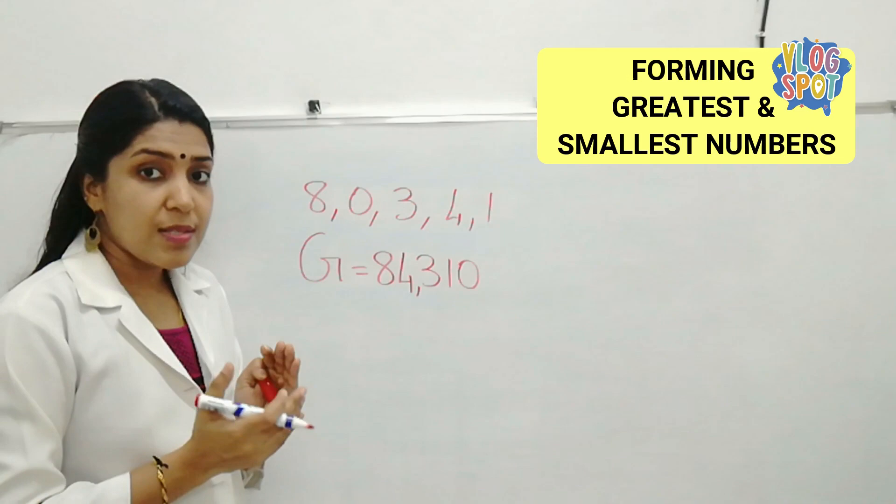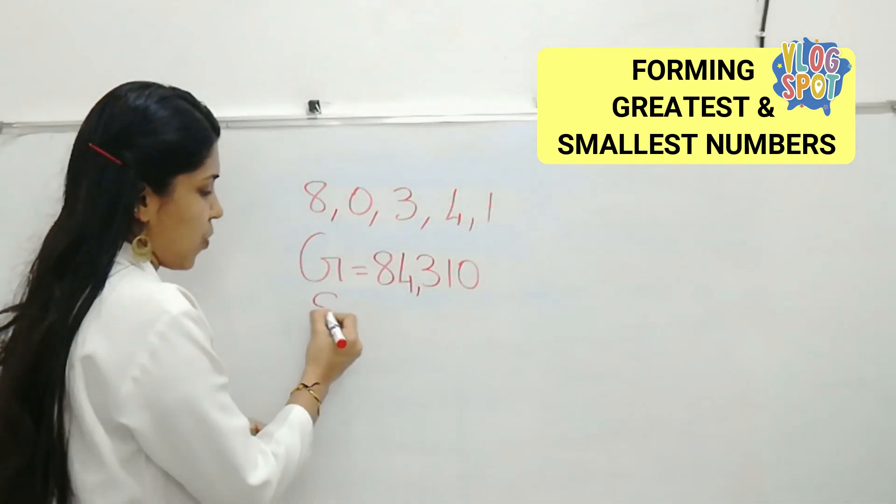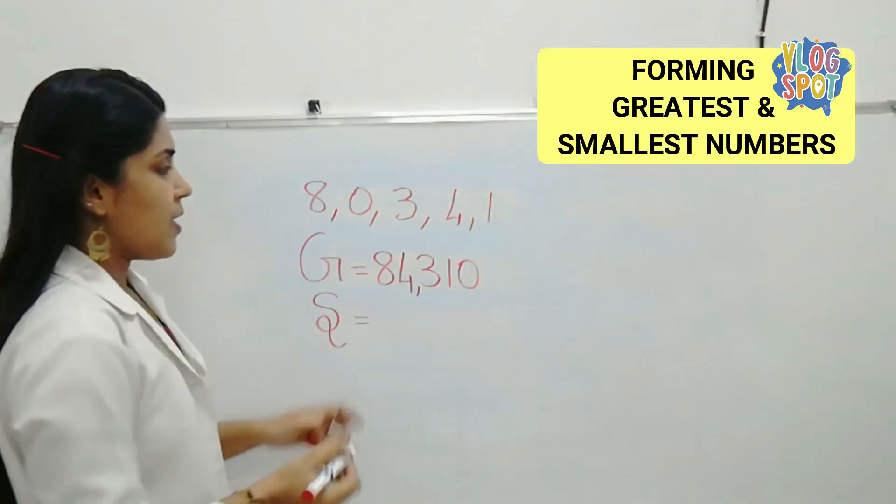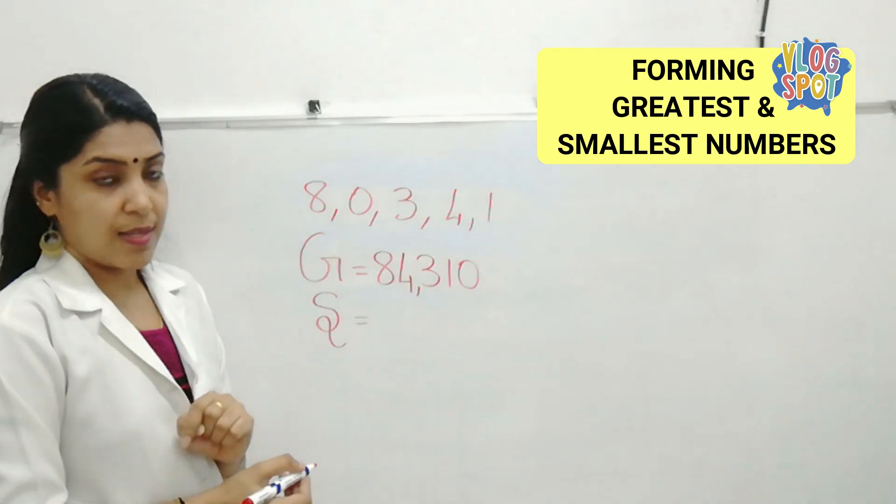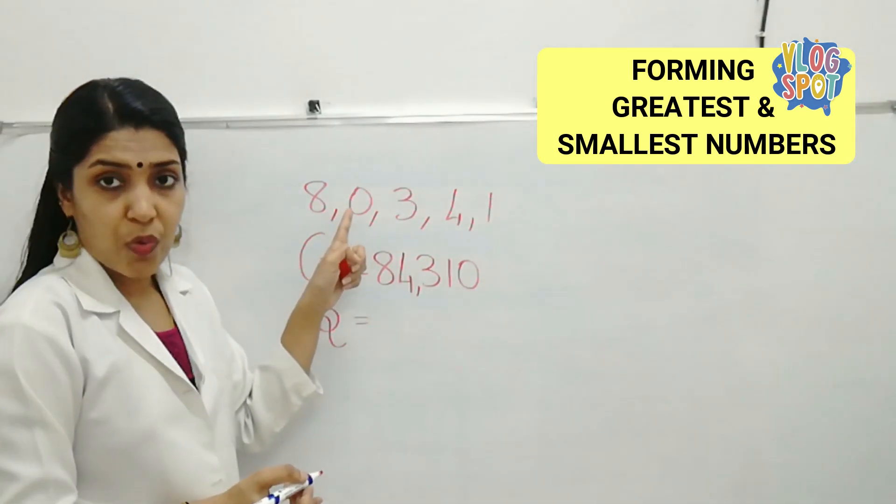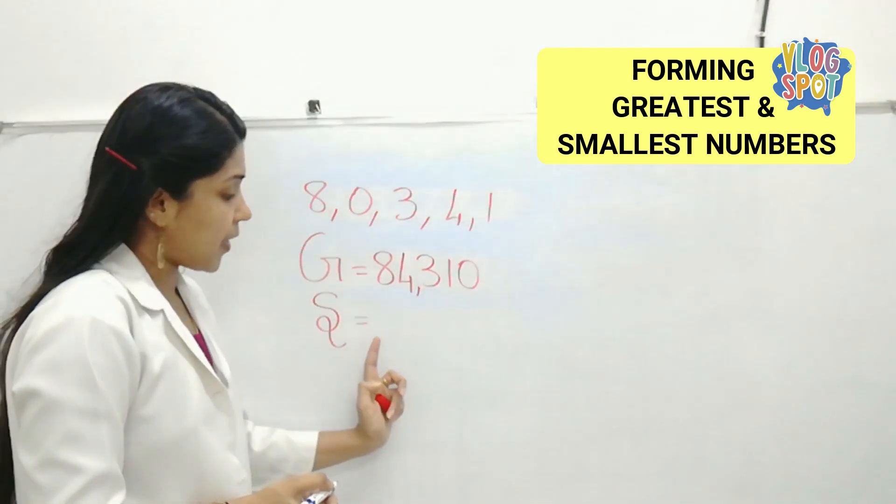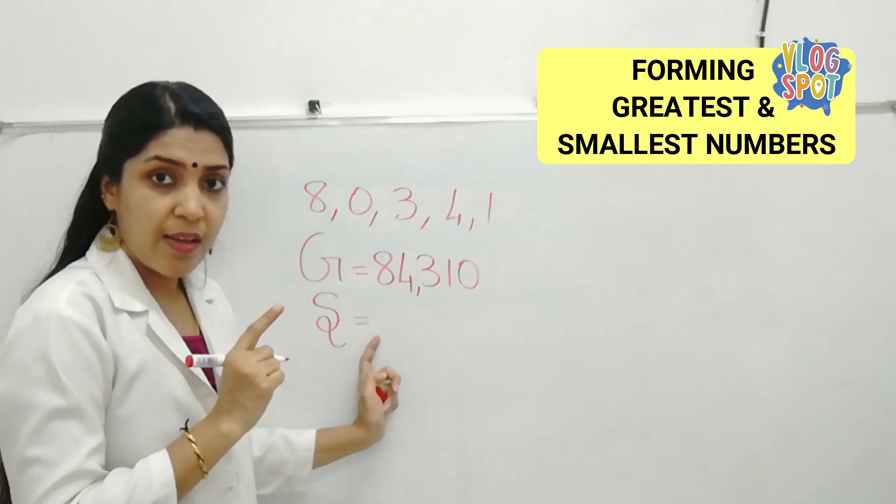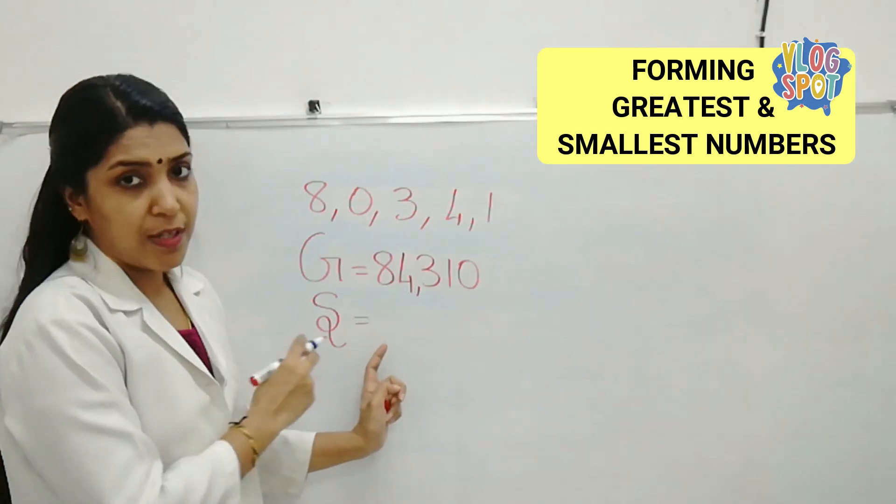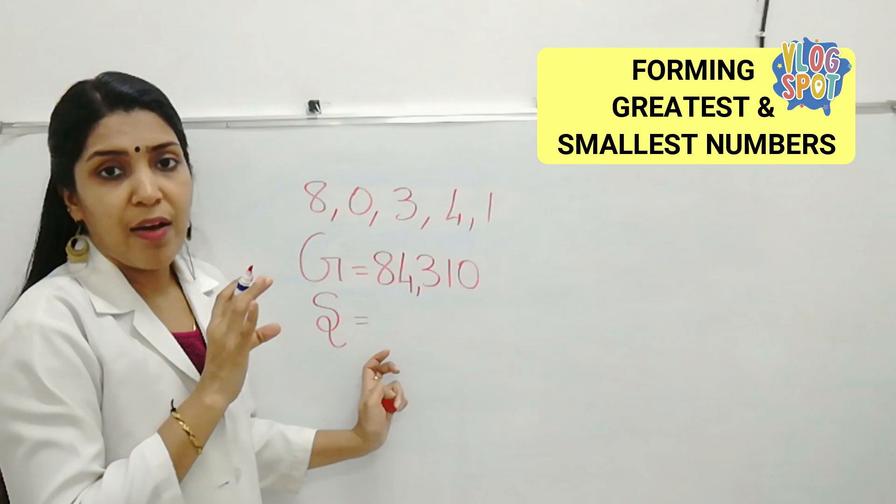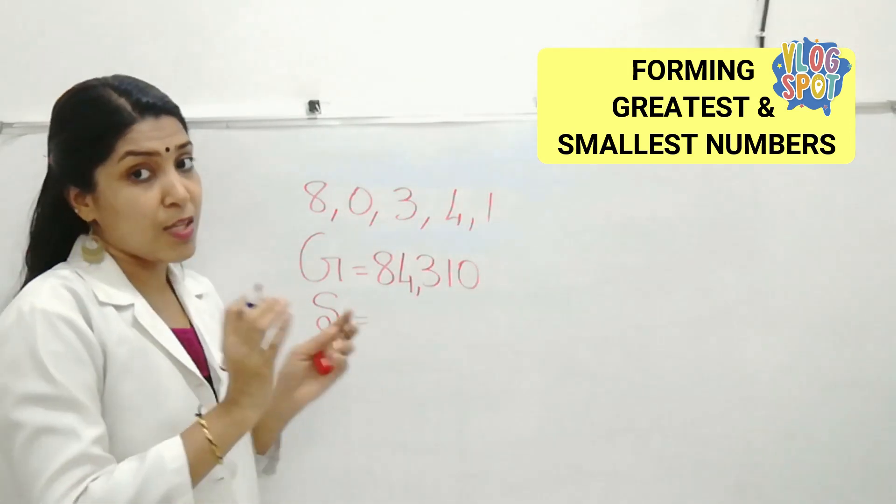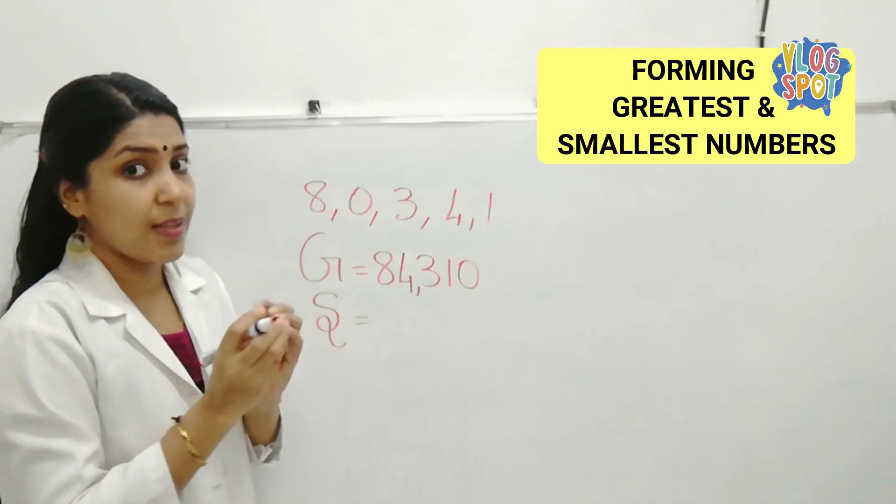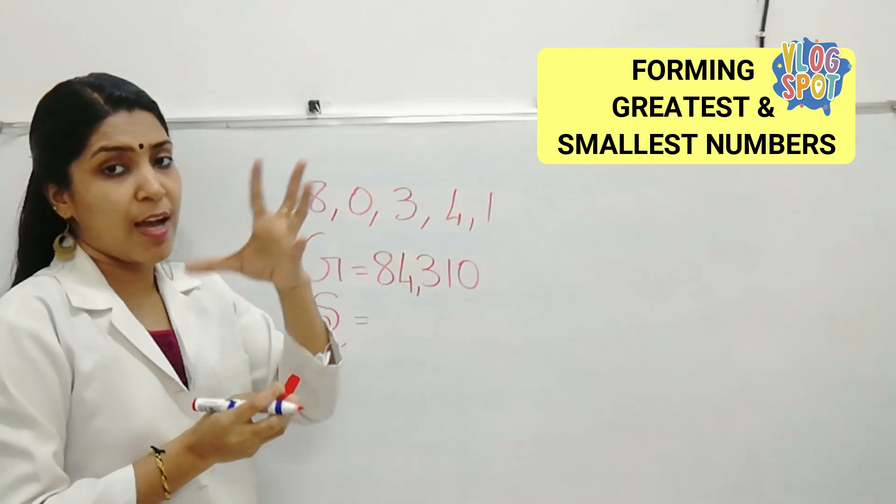Then what about the smallest number? Smallest possible number we can form using the digits. Here, the smallest number is 0, right. But we can't write 0 first. Why? If 0 comes in the first, it don't have any value.